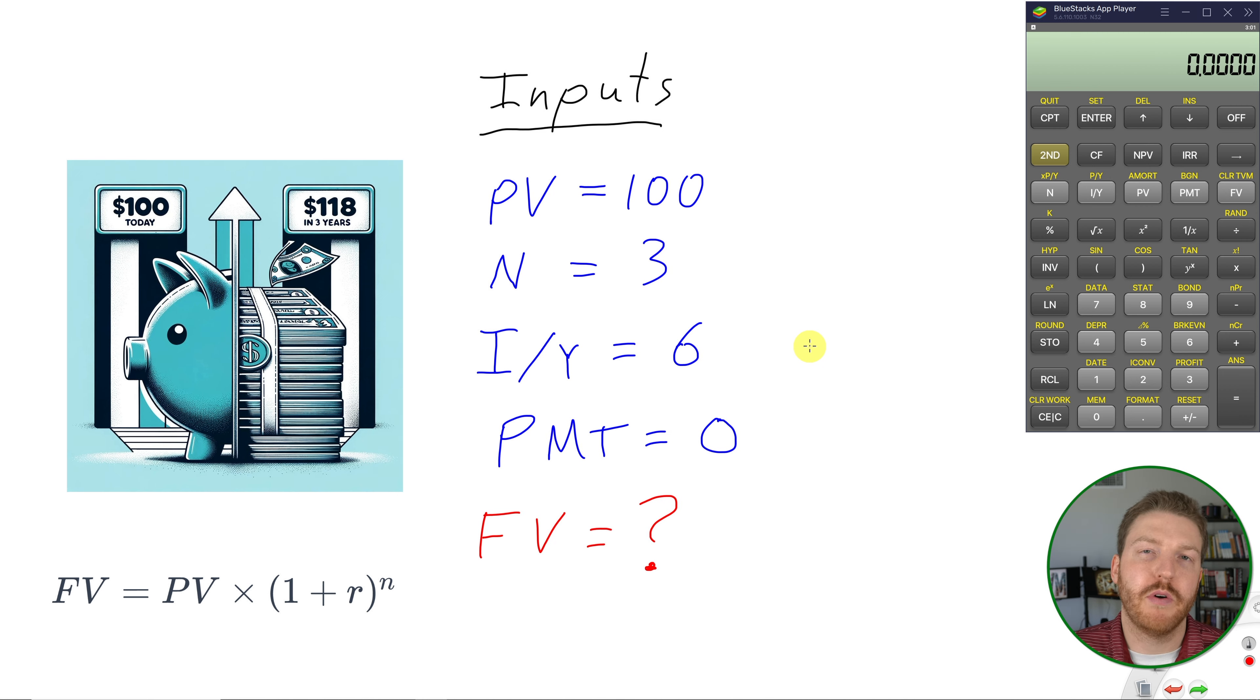So let's use a financial calculator to find out which of these two options you actually prefer. To answer the question of whether you would prefer a $100 lump sum payment today versus a $118 lump sum payment three years from today at a 6% rate of interest, we can use a financial calculator to simplify our work.